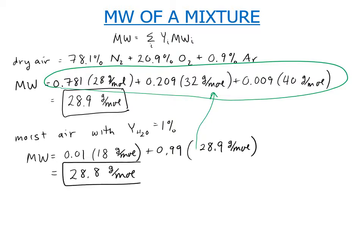Notice that the moist air actually has a lower molecular weight than the dry air does because we've substituted in water, which has a lower molecular weight of 18 grams per mole for some of the other components.